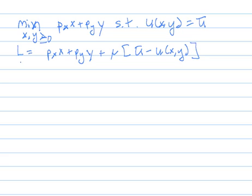And then the first order conditions are L sub x is p sub x. I made a little blunder here. Let's make an erasure. And then get back to this: p sub x minus mu u sub x equals zero. That's the partial of Lagrangian with respect to x.